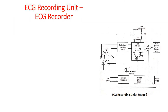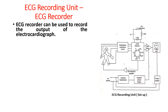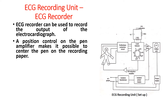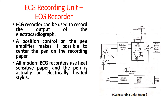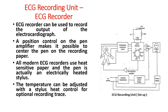ECG recorder. An ECG recorder can be used to record the output of an electrocardiograph. A position control on the pen amplifier makes it possible to center the pen on the recording paper. All modern ECG recorders use heat-sensitive paper and the pen is actually an electrically heated stylus. The temperature can be adjusted with a stylus heat control for optimal recording trace. Generally, an electrocardiogram is recorded at a paper speed of 25 mm per second, but a faster speed of 50 mm per second is also provided to allow better resolution.